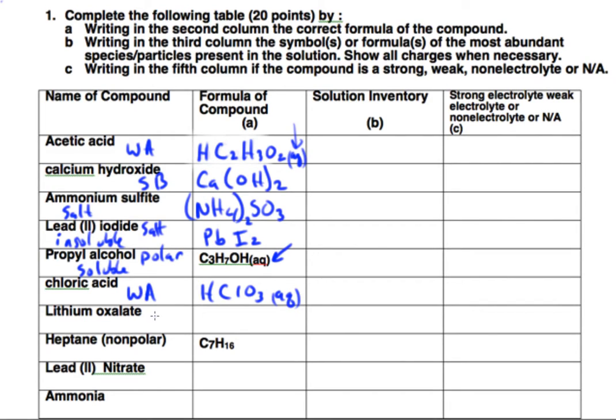Lithium oxalate is a salt. We know it is soluble because it's a lithium compound. Lithium compounds, group 1A, it's going to be soluble. Oxalate, C2O4, is negative 2.